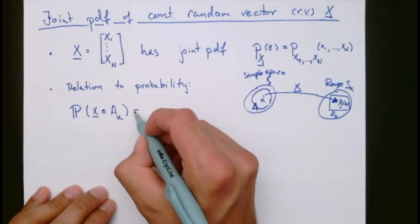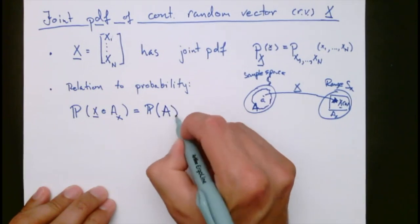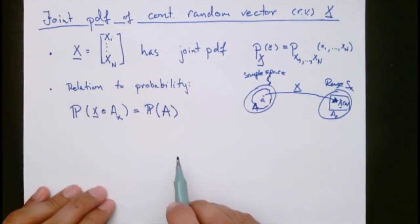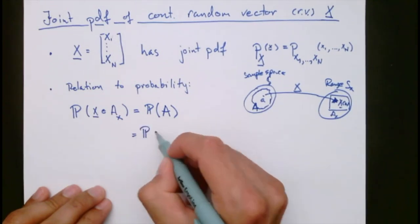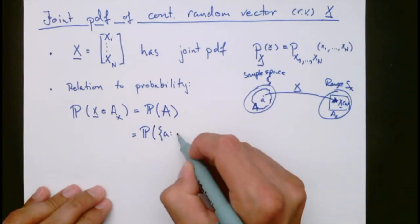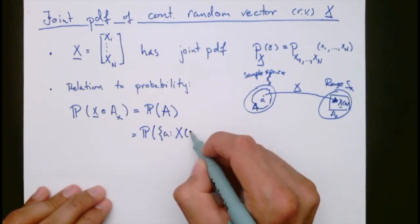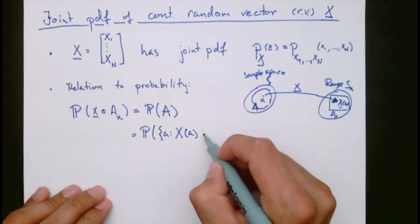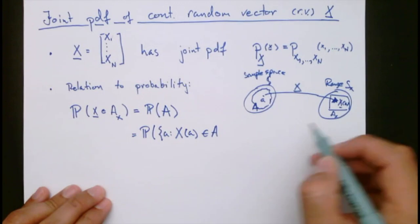So this here we define as the probability of the event A. And here we have defined, as before, A as the set of all outcomes such that x actually ends up in this space here, or in this set Ax.